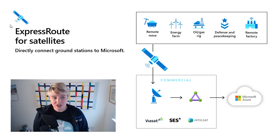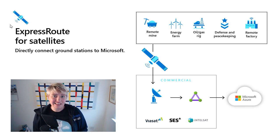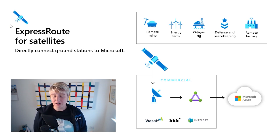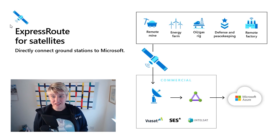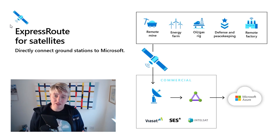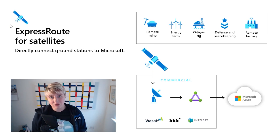Something pretty cool is the ability to run ExpressRoute over satellites. This isn't something every city-based office would need, but for companies with remote sites — a remote factory in the middle of nowhere, or oil and gas rigs — being able to provide connectivity to Azure via satellite while still maintaining a reliable and secure connection is a great option.